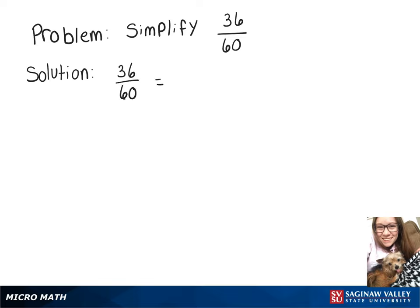So if we thought of a common factor that's smaller than the greatest one, we would just have to simplify it again. But I know that 12 fits into 36 three times, and it goes into 60 five times.